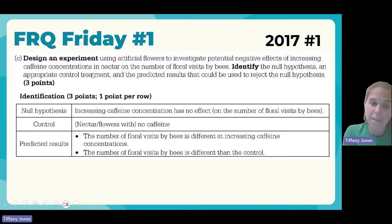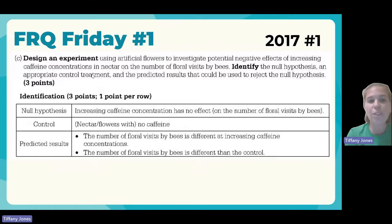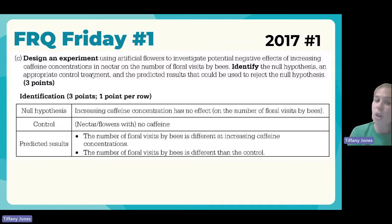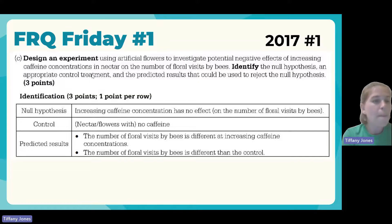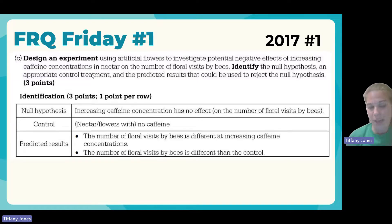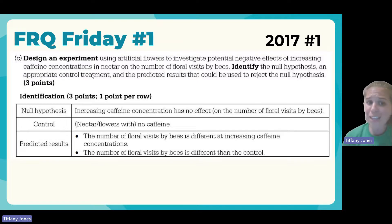Part C asks us to describe an experiment using artificial flowers to investigate the negative effects of increasing caffeine concentrations. The independent variable is increasing caffeine concentrations and the dependent variable is the number of floral visits. The null hypothesis states there is no effect. On the exam, be specific: state that the independent variable has no effect on the dependent variable. In this example: 'Increasing caffeine concentrations has no effect on the number of floral visits by bees.'